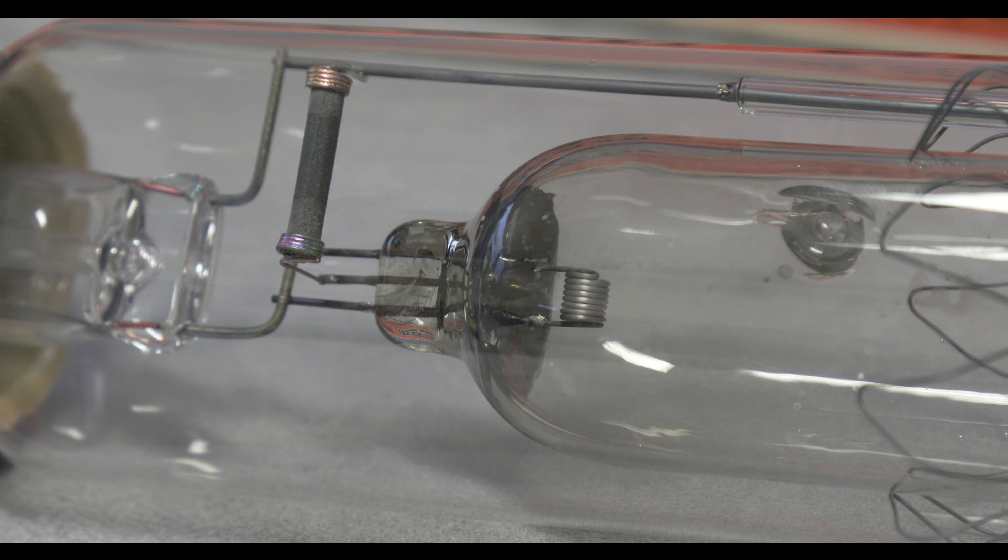At the cap end we can see the other electrode, and in between the two lead wires is the auxiliary starting electrode and its associated resistor.